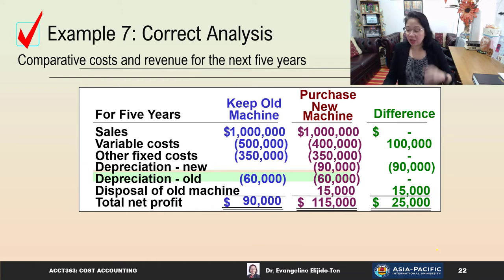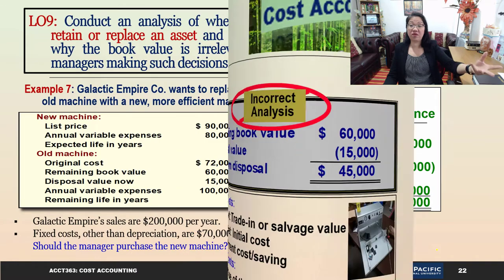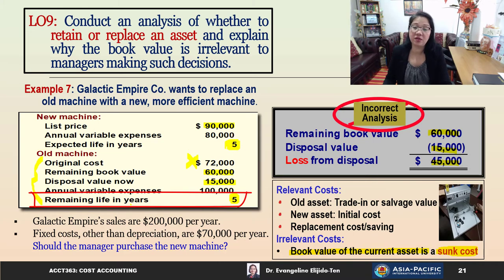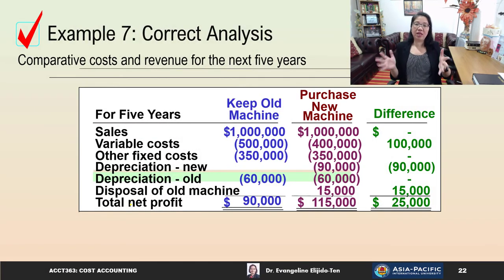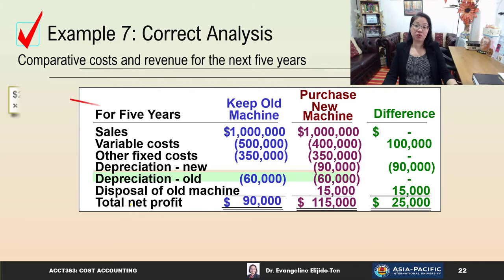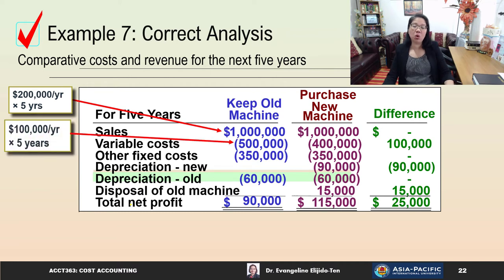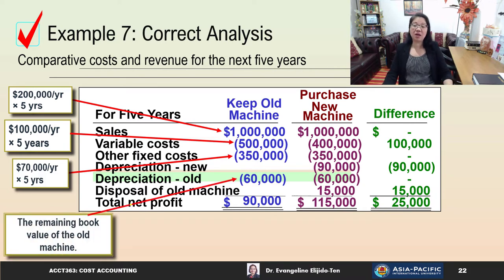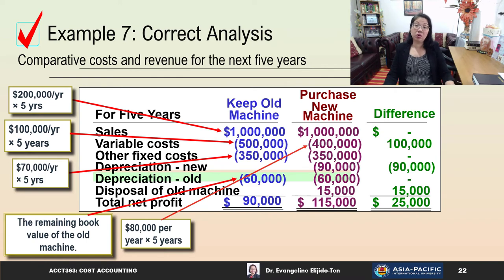Let's look at the correct analysis. We compare costs and revenues for the next five years — the expected life of both the new and old machine. If we keep the old machine: sales $1,000,000 (five years), variable cost $500,000, fixed cost $350,000, remaining book value $60,000. For the new machine: sales are the same; variable cost is lower at $400,000; fixed cost is the same. Depreciation for the new machine totals $90,000 over five years, and we receive $15,000 disposal value from selling the old machine.